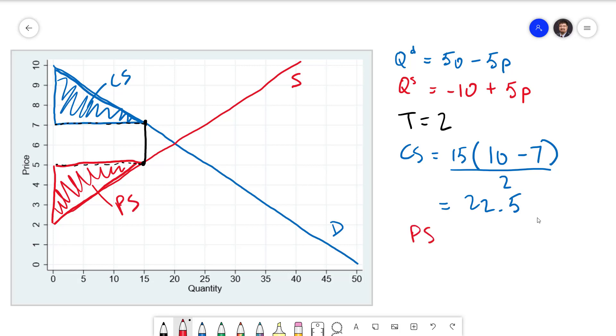To calculate that we have a base of 15, a height of 5 minus 2, that's 3 again. Divide that by 2. Again we get 22.5. The fact that these end up being the same is not a general result and it does not have to be the case.